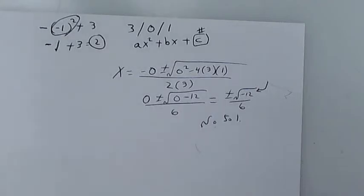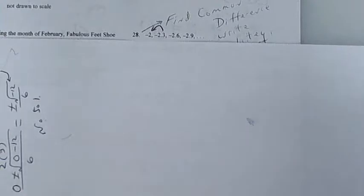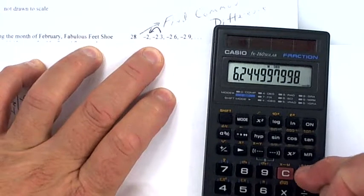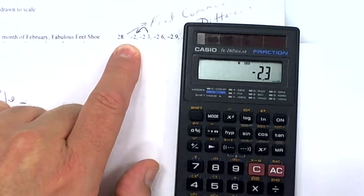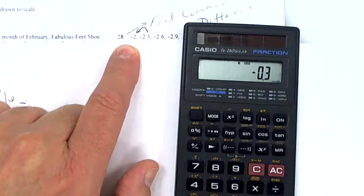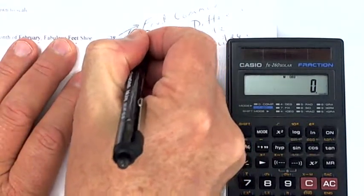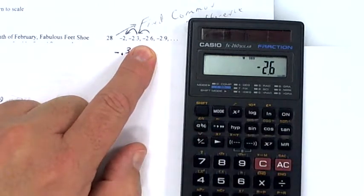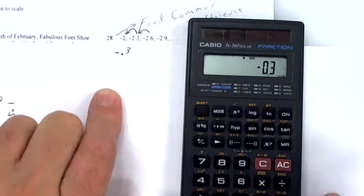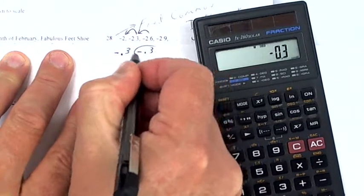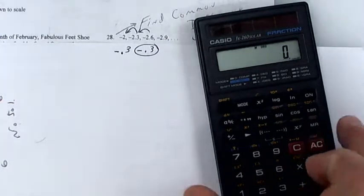Find the common difference. Subtract backwards: press −2.3, then minus −2 — you get −0.3. Check with the next pair: press −2.6, minus −2.3 — you get −0.3 again. So the common difference is −0.3.